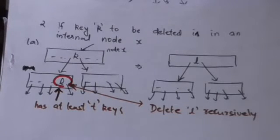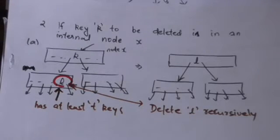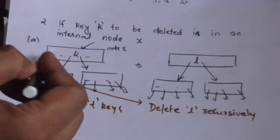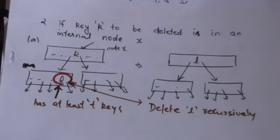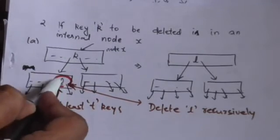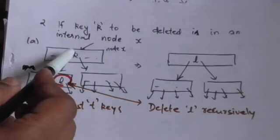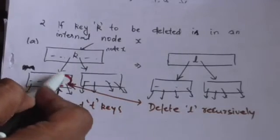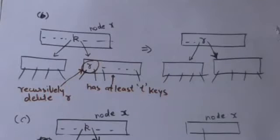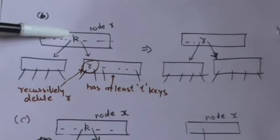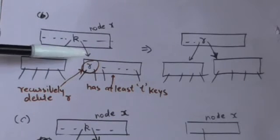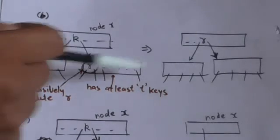The second case is when the key K is in an internal node X. There will be three sub-cases. The first sub-case is when the child of node X that precedes key K has at least T keys. In this case, we recursively delete the rightmost key L of that preceding child and replace key K with key L. Similarly, the second sub-case is when the child of node X that follows key K has at least T keys — we recursively delete the leftmost key R of that child and replace key K with key R.